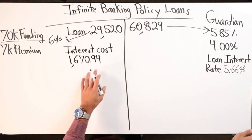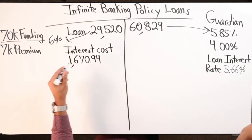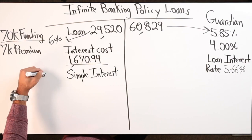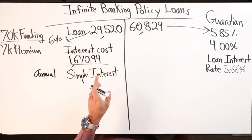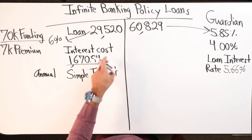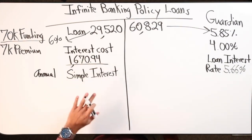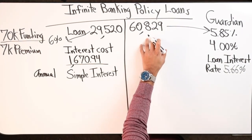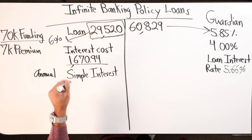Now when you owe a policy loan on your policy, the interest is simple interest. They actually call it annual simple interest, so it's right up front. I believe if I were to pay this sooner then I don't pay all that amount - I'd have to check on that. But right now my goal is to just let it stay outstanding for the whole year.